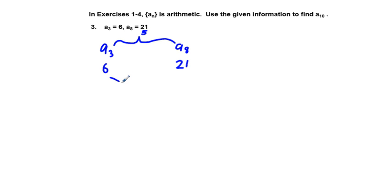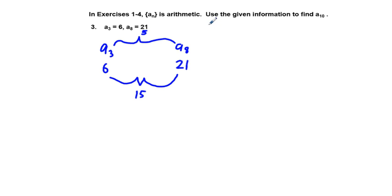Now we look at the numbers between 6 and 21. What is the difference between these two numbers? It's going to be 21 minus 6, or 15. Another way to state it: 6 plus 15 equals 21. So per term, we have 15 covered by five terms, and since this is an arithmetic situation, d equals 3.